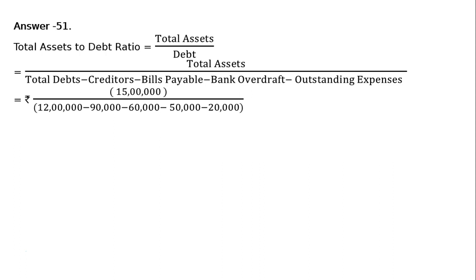rupees 90,000 minus rupees 60,000 minus rupees 50,000 minus rupees 20,000. That is equal to rupees 15 lakhs upon rupees 9 lakh 80,000. That is equal to 1.53:1. And this is the total assets to debt ratio.